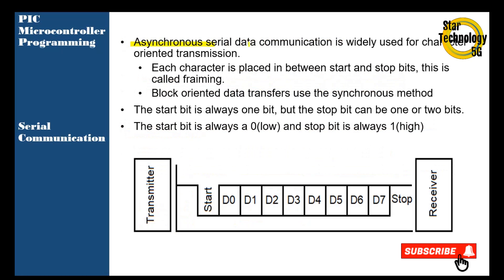We will use the MAX232 in our project to communicate data with a PC. Asynchronous serial data communication is widely used for character-oriented transmission. Each character is placed between start and stop bits — that is called framing. Block framing data transfer uses the synchronous method. The start bit is always 1 bit, but the stop bit can be 1 or 2. The start bit is always 0 and the stop bit is always high.